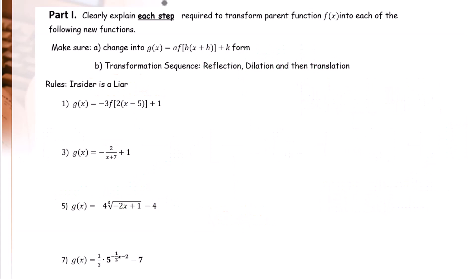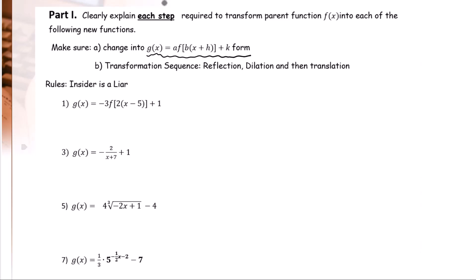Go to examples. Part 1: clearly explain each step required to transform a parent function f(x) into each of the following new functions. Make sure to change into transformed form. The transformation sequence is: reflection, then dilation, then translation. Remember the rule — insider is a liar. For Question 1, there will be five steps: first, second, third, fourth, and fifth.